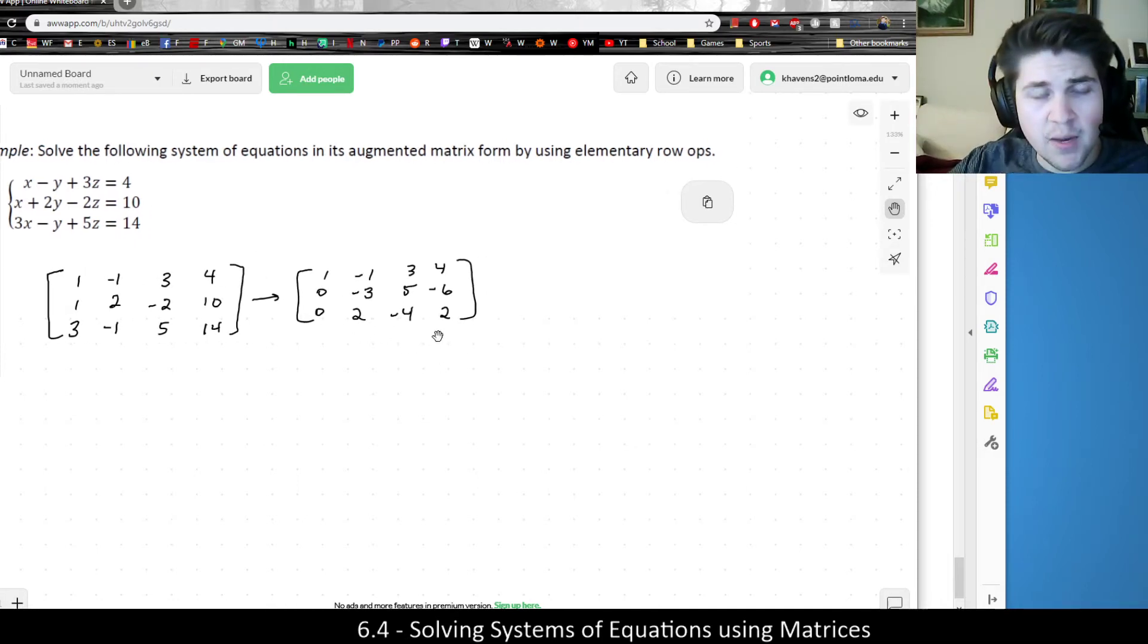Also, another trick that I could do is I could notice that the third row is divisible by two. Another thing I'm allowed to do in the row operations, which I did not use in the previous video, is I'm allowed to interchange the rows. So what I'm going to do next is I'm going to interchange row two and row three. And I'm going to divide row three by two. So I'm going to keep the first one the same. Zero, one, negative two, one. And I'm going to swap the third row down to the bottom.